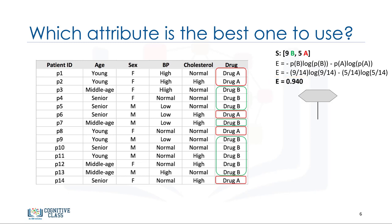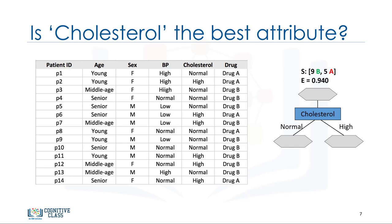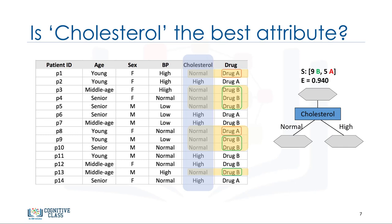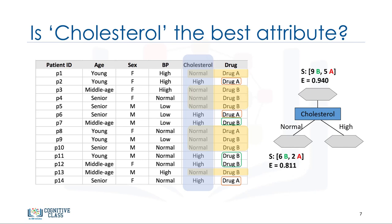So, what is entropy after splitting? We can test different attributes to find the one with the most predictiveness, which results in two more pure branches. Let's first select the cholesterol attribute and see how the data gets split. When cholesterol is normal, we have 6 for drug B and 2 for drug A, giving an entropy of 0.8 for this node. But when cholesterol is high, the data splits into 3 for drug B and 3 for drug A, giving an entropy of 1.0.